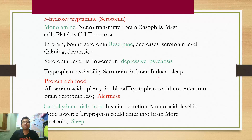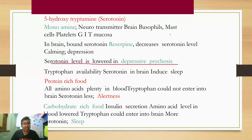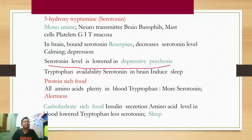Regarding applied aspects: serotonin is an excitatory neurotransmitter. If serotonin level is low, it leads to depression — lowered serotonin level leads to depressive psychosis. All patients with depression have serotonin lowering. Protein-rich food is rich in tryptophan, so more tryptophan means more serotonin entering the brain, causing alertness. However, if someone eats carbohydrate-rich food, it lowers the tryptophan level, meaning less serotonin in the brain, which induces sleep.